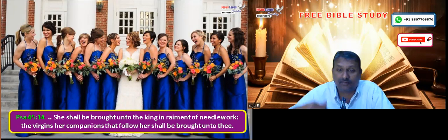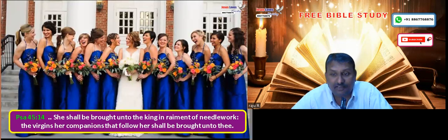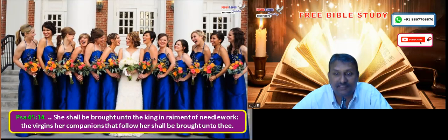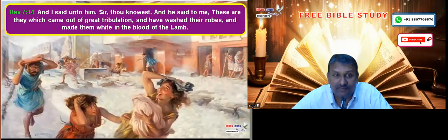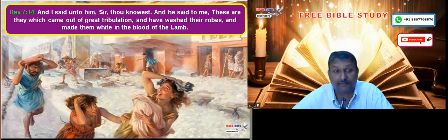We have all consecrated and dedicated our lives to the Lord because we want to be of the 144,000. We want to be of the divine nature and never want to lose the crown. But because of unfaithfulness, if we lose the crown, we will be of the great multitude class. What will happen to the great multitude? They shall be put into great tribulation.